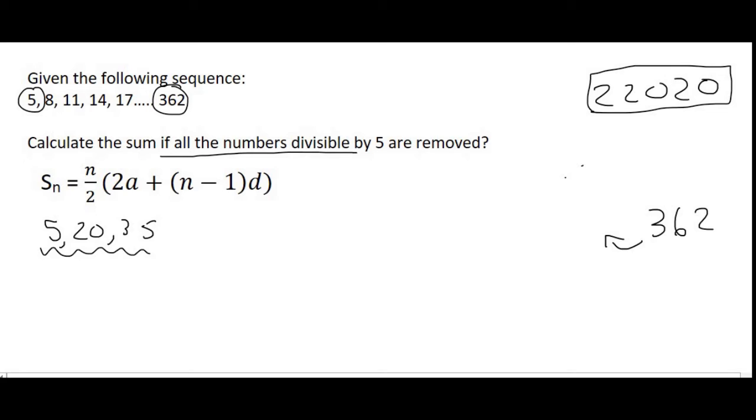Because, we know that the difference is 3. So, if we minus 3, then the previous number should be 359, then 356, then 353, and then 350, which is divisible by 5. So, the last term in our divisible by 5 pattern is 350.